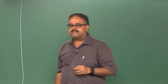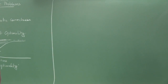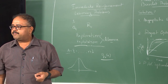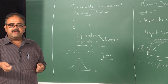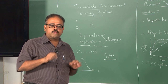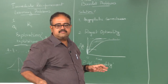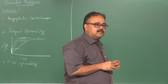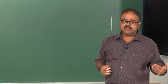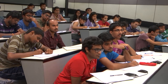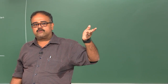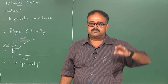In a bandit setting, being approximately correct means: at the end I give you an arm A, and Q*(A) — the true expected payoff — will be very close to Q*(A*), the payoff of the best arm. My algorithm does not know Q* but the guarantee is that the unknown Q*(A) will be close to Q*(A*). This is the approximately correct part.